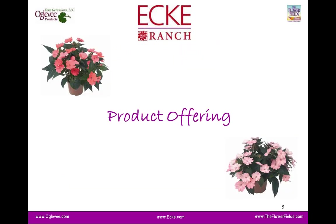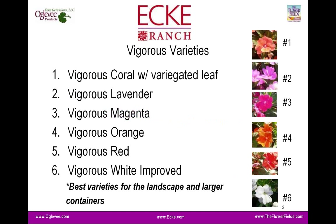Before we jump into culture, let's go through an overview of the product offering. We have three series within the SunPatiens line. The vigorous varieties are the first — these are the first varieties on the market and probably the most familiar to growers and consumers. They include vigorous coral with a variegated leaf, vigorous lavender, vigorous magenta, vigorous orange, vigorous red, and vigorous white improved. The vigorous series are best for landscape and larger container applications.